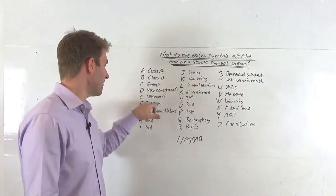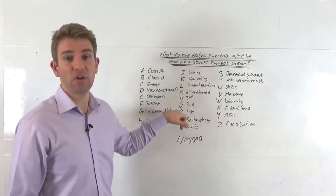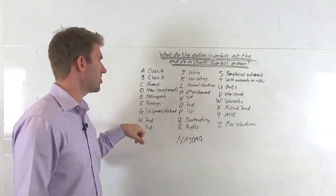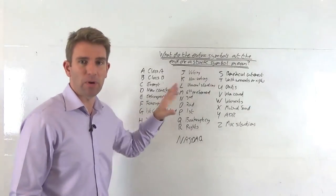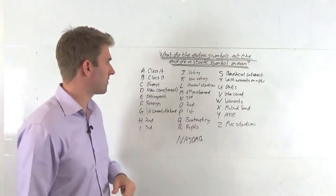E, delinquent. F is foreign. G is a first convertible bond. Then we've got H and I, which is the second convertible bond for the same company and third convertible bond for the same company.